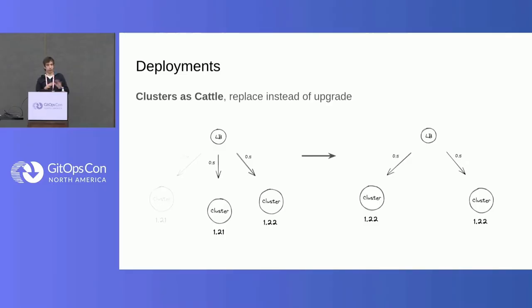From a state where we had three clusters — one at 1.22 with 20% — we eventually move to where we've gotten rid of one of the old clusters and split the load half-half between the 1.21 and 1.22 clusters. With time, we deploy a new 1.22 and get rid of the old ones. This is how we do cluster upgrades. One thing that is obvious here is that if you don't have very good automation of your deployments, this is extremely hard to maintain — so this is where we put our investment.